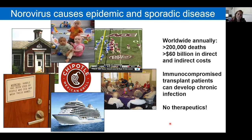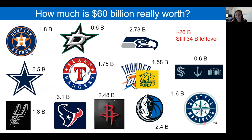Immunocompromised patients can develop chronic norovirus infections, and unfortunately there are no therapeutics. I wanted to put that $60 billion number into some perspective, because once numbers get that big, it's a little difficult to know how much that really is.